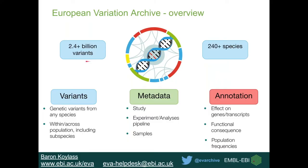At the archive itself, we contain about 2.4 billion variants across 240-plus species. The variant data is from any type of species — whether human, livestock, or bacterial — including across populations and subspecies. The metadata associated with the variant data is also contained alongside it. Any variant data submitted to us we run Ensembl's Variant Effect Predictor to provide annotation, giving functional consequences on genes and transcripts, and we also calculate population frequencies for each submission.